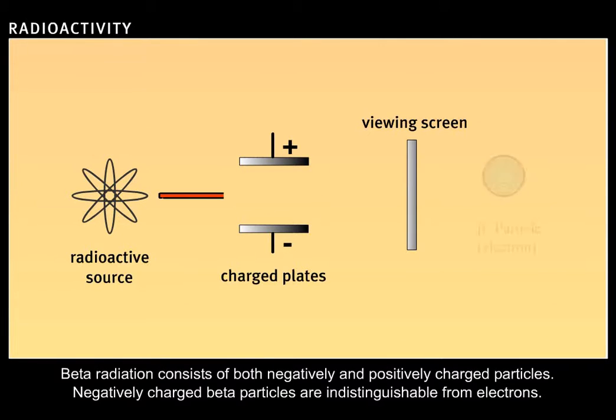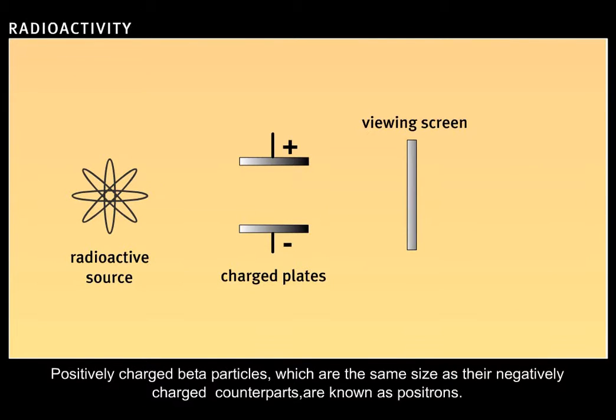Beta radiation consists of both negatively and positively charged particles. Negatively charged beta particles are indistinguishable from electrons. Positively charged beta particles, which are the same size as their negatively charged counterparts, are known as positrons.